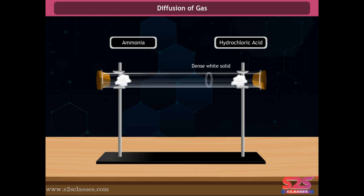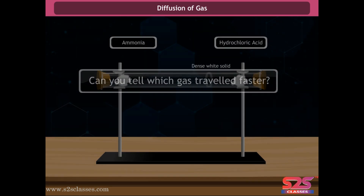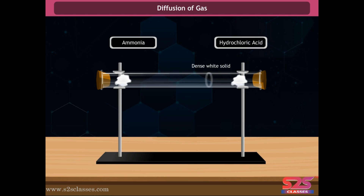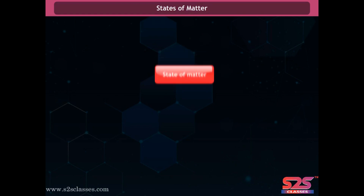The white ring is formed closer to the hydrogen chloride end. The distance between the cotton wool soaked in ammonia and the dense white ring is greater than that between the cotton wool soaked in hydrochloric acid and the white ring. From this experiment we conclude that ammonia gas covered a greater distance inside the tube, meaning ammonia gas traveled faster.